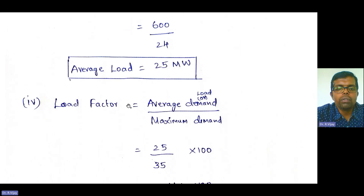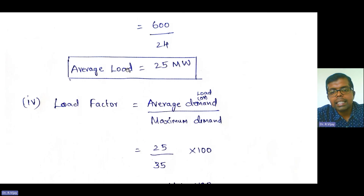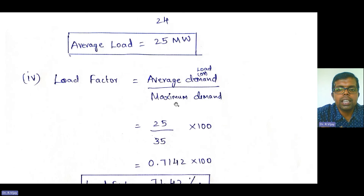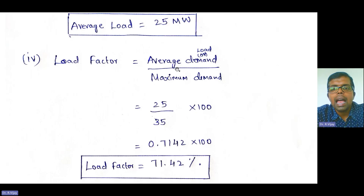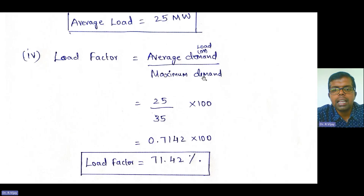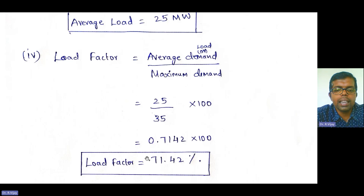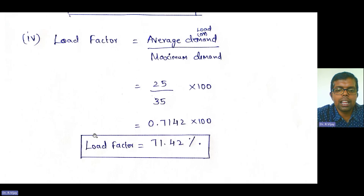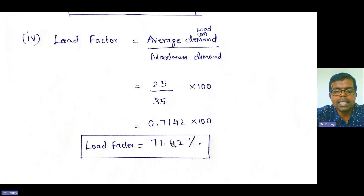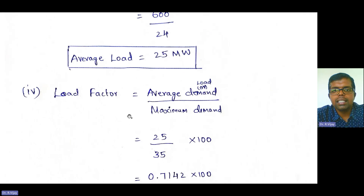Load factor is equal to average demand divided by maximum demand. Average demand is 25 megawatt and maximum demand is 35 megawatt. So 25 divided by 35, multiplied by 100, gives a load factor of 71.42%. Load factor is always expressed as a percentage, and this tells us how efficiently the load is utilized in this particular cycle.